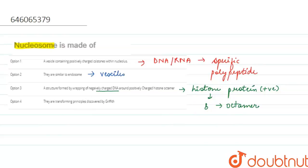But now let's discuss our fourth option: they are transforming principle discovered by Griffith. So the scientist Griffith performed experiments on bacteria and he could find that there was one S strain and one R strain and there was something which converted the R strain into the S one. So that is something related to transforming principle.